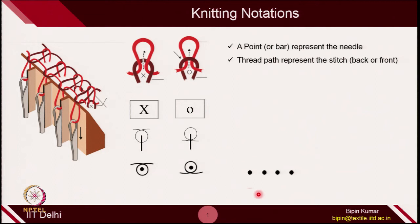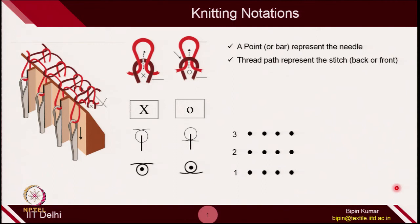Similar to the single bed needle arrangement, you have also learned about needle gating. In a rib machine or double bed machine, the needles are not directly facing each other for the front and back bed. When making fabric on a double bed machine, you represent the needles according to their gating. The front bed is shown in the bottom row of needles and the back bed on the top, with needles laterally displaced for rib structure.